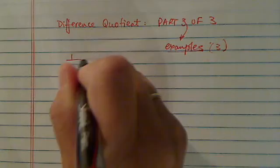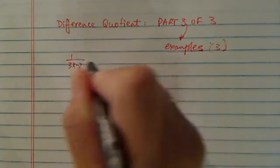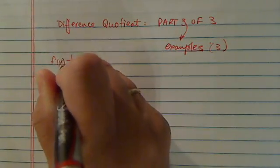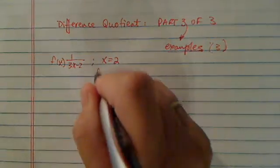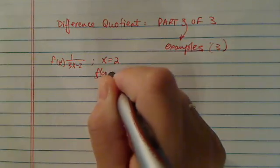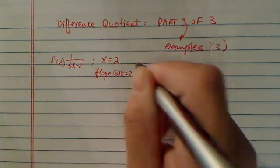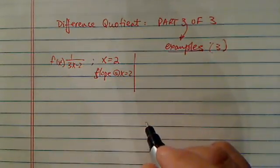So first one, I'm going to do 3x minus 2. Here's f of x. And for this one, I want to evaluate it when x is equal to 2. So basically, I'm looking for slope. Let's look. Slope at x equal to 2. So this one actually has a numerical value.